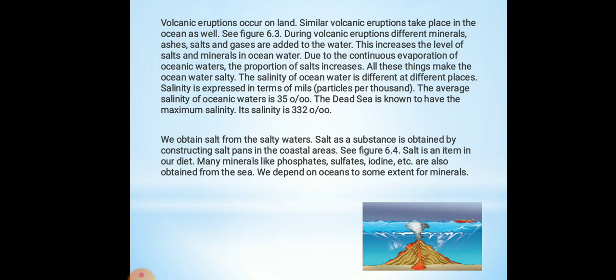Volcanic eruptions occur on land, and similarly, volcanic eruptions take place in the oceans as well. When a volcano occurs on land, some mountains get formed as the lava collects. During volcanic eruptions in the ocean, different minerals, ashes, salt, and gases are added to the water. This can come as an exam question: what is the effect of volcanic eruptions? The answer is that different minerals, ashes, salt, and gases are added to the water, which increases the level of salt and minerals in the ocean.